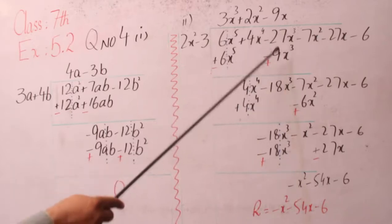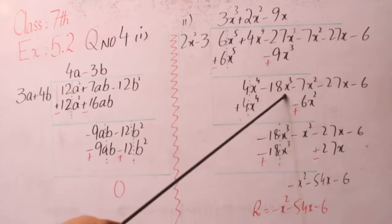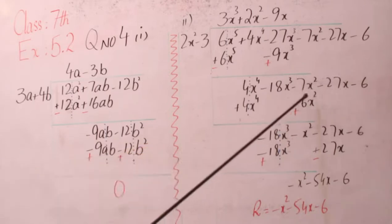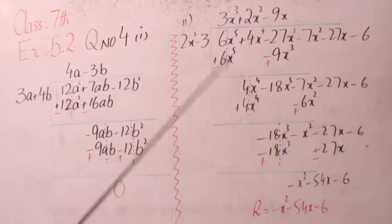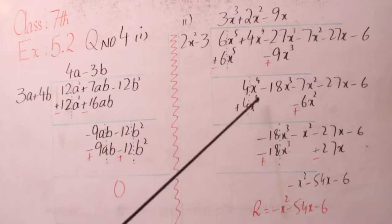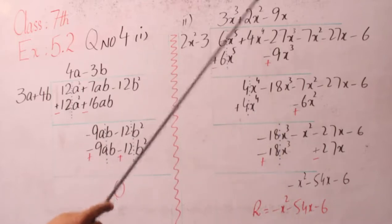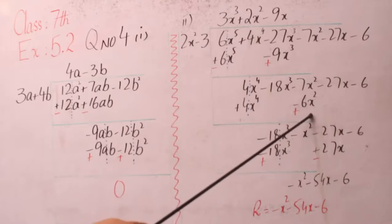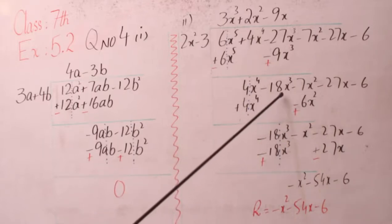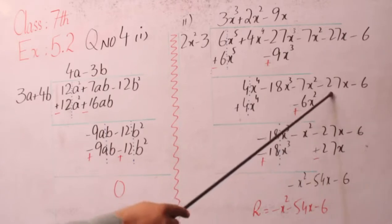اب 4x⁴ نیچے آ گیا۔ بڑی value کا sign آئے گا، بڑی value minus، 27 سے plus کی value نکال دیں تو minus 18x³ باقی۔ جو ساری values تھیں وہ ہم نے نیچے لکھ دیا۔ 4x⁴ بنانا ہے تو 2x² کو 2x² سے multiply کریں گے تو 4x⁴ بنے گا۔ یہی value جب minus 3 سے multiply ہو تو 6x²، x² کی value کے ساتھ نیچے لکھ دیا۔ یہ cut گیا۔ 18x³ اور وڑی value کا sign minus ہے تو minus x² باقی۔